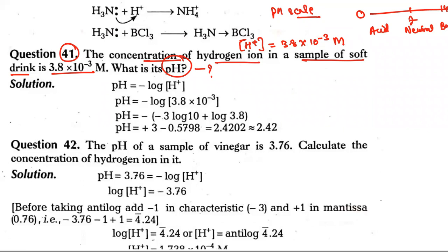For this solution, if the concentration of hydrogen ion is 3.8 × 10^-3 molar, how much pH is it going to be? It is a very simple formula: pH = -log[H+]. So pH is minus the logarithm of H+ ion concentration.